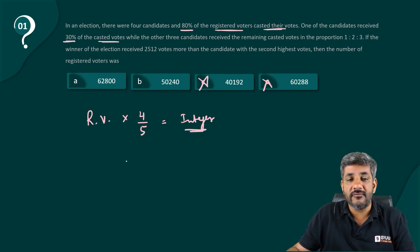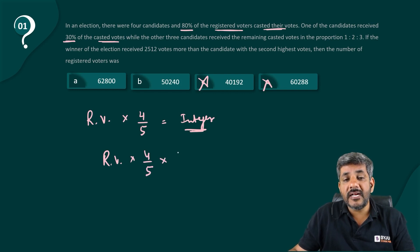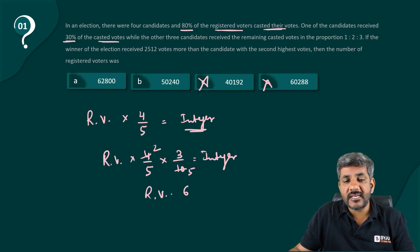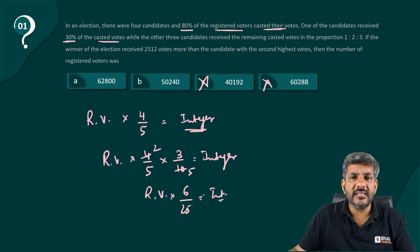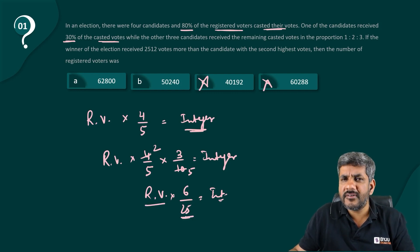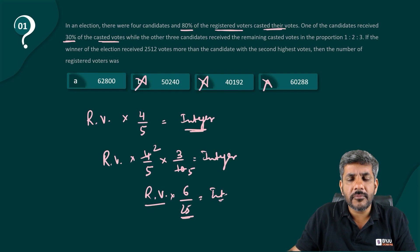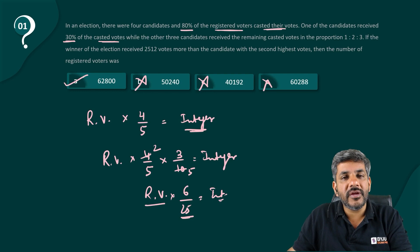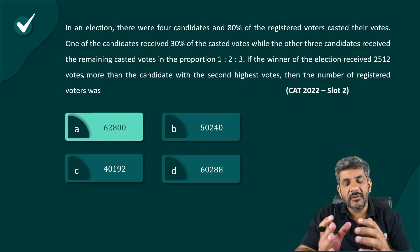One candidate received 30% of the casted votes. Casted votes are 4/5 of registered voters, so 30% of that is 3/10 × 4/5 = 6/25 of the registered voters — and that must also be an integer. Therefore, registered voters must be a multiple of 25. By that logic, option B is also eliminated. That's it — the answer is option A.